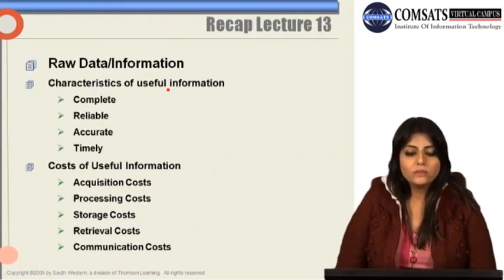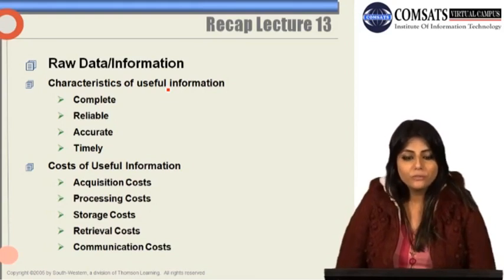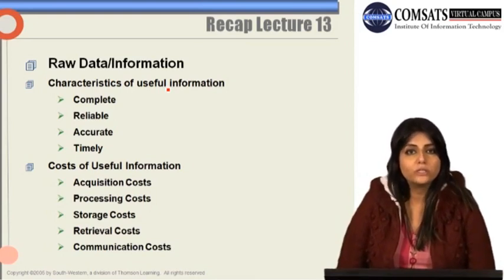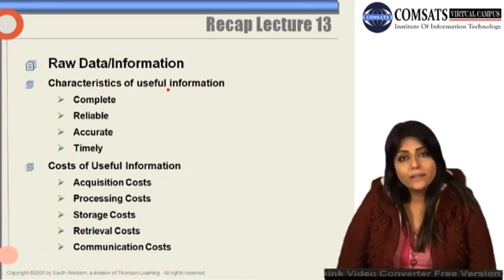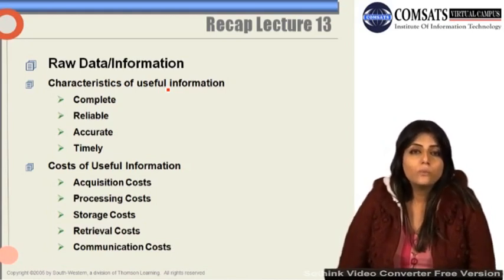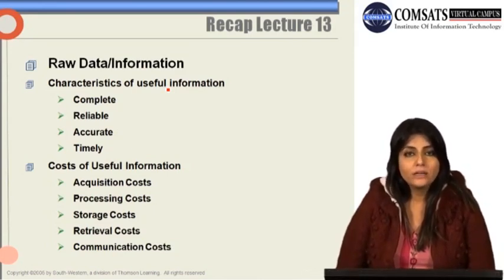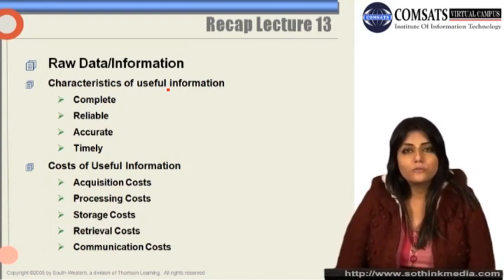In lecture 13 we had a discussion on how information is managed in organizations — what are the best ways to manage information, and what were the old and new ways of managing information. We started with the distinction between raw data and information, and saw how raw data becomes useful when it can be applied meaningfully in the decision-making process. Then we saw the different characteristics of useful information.